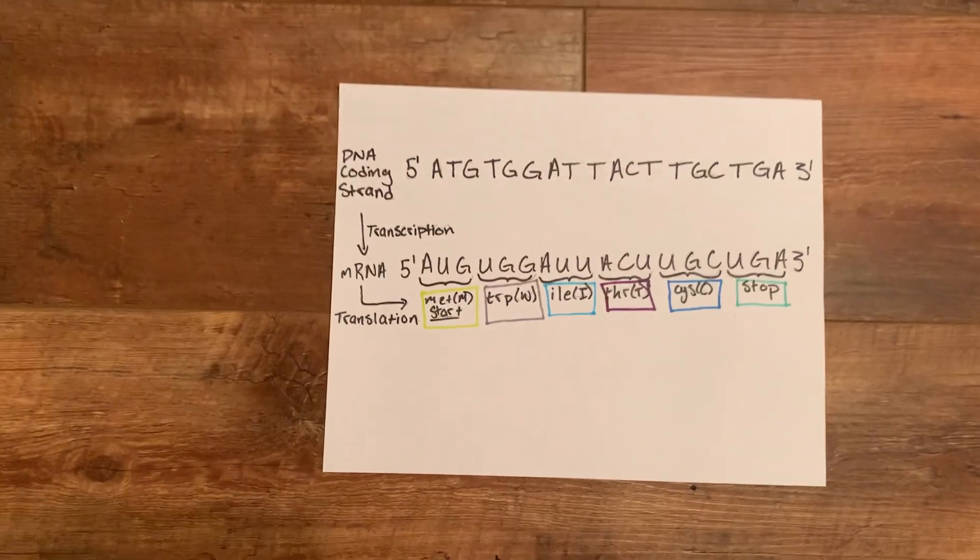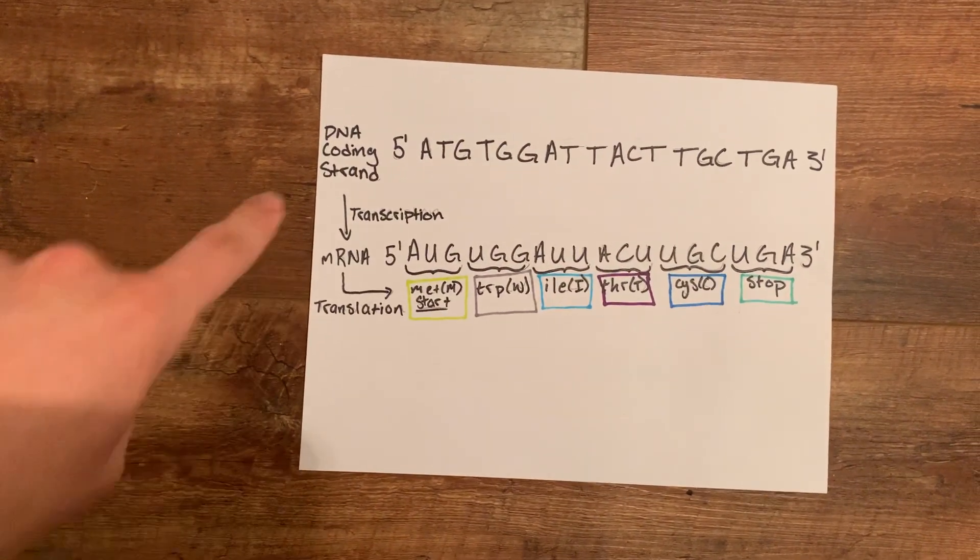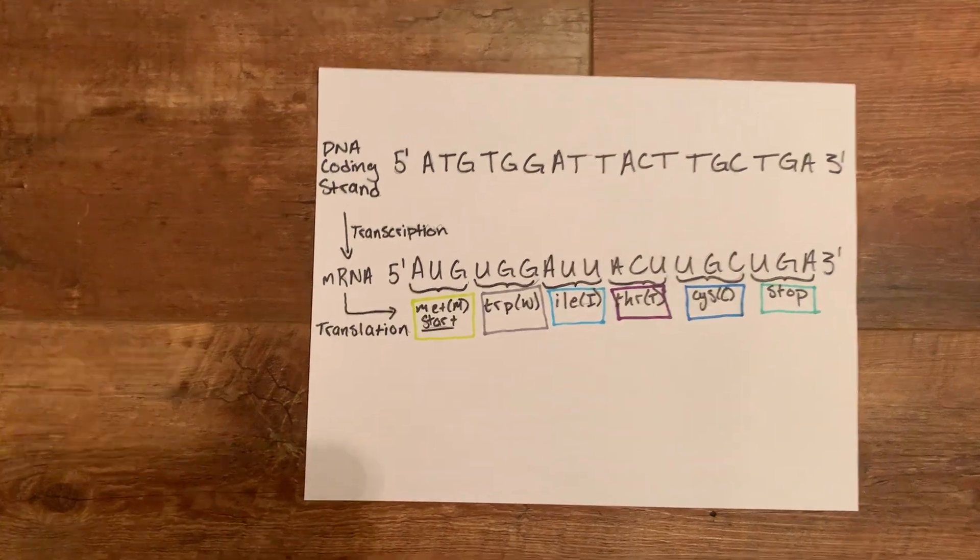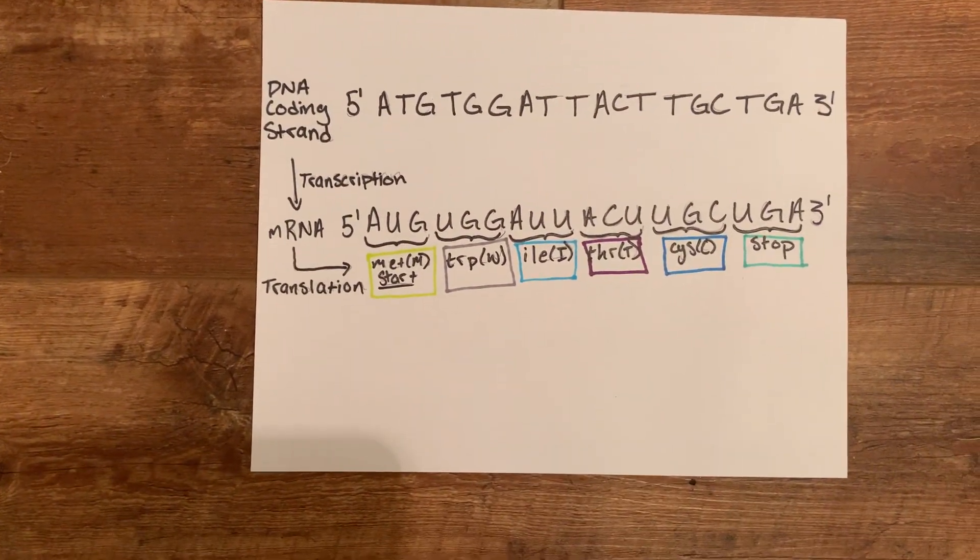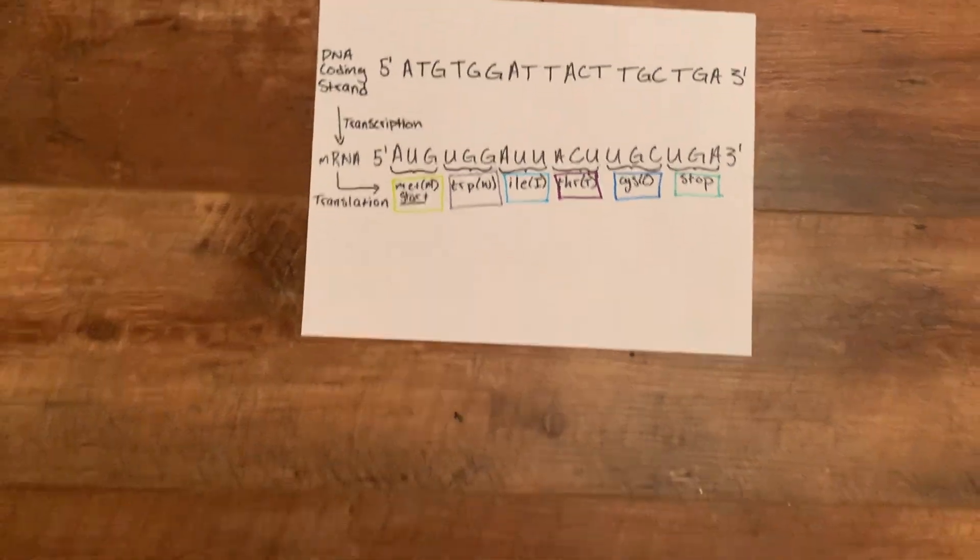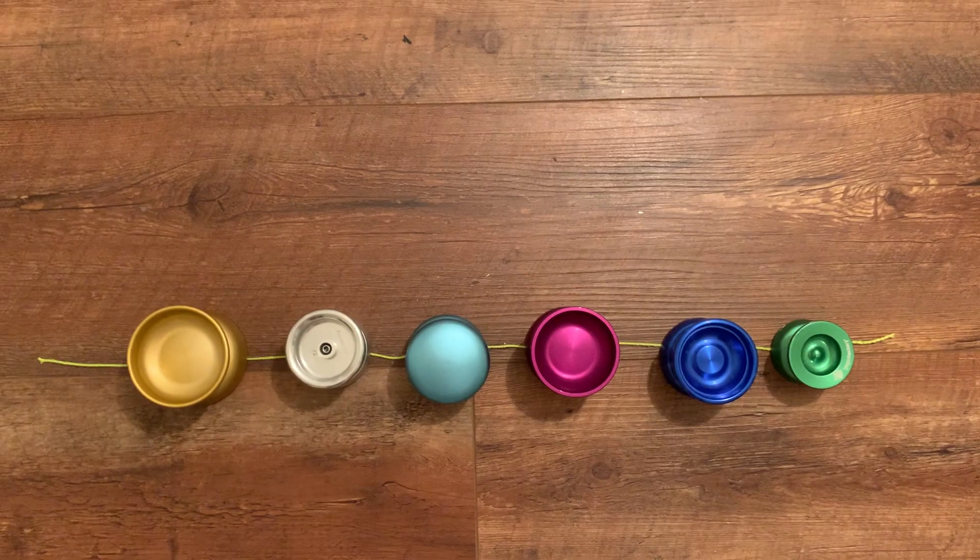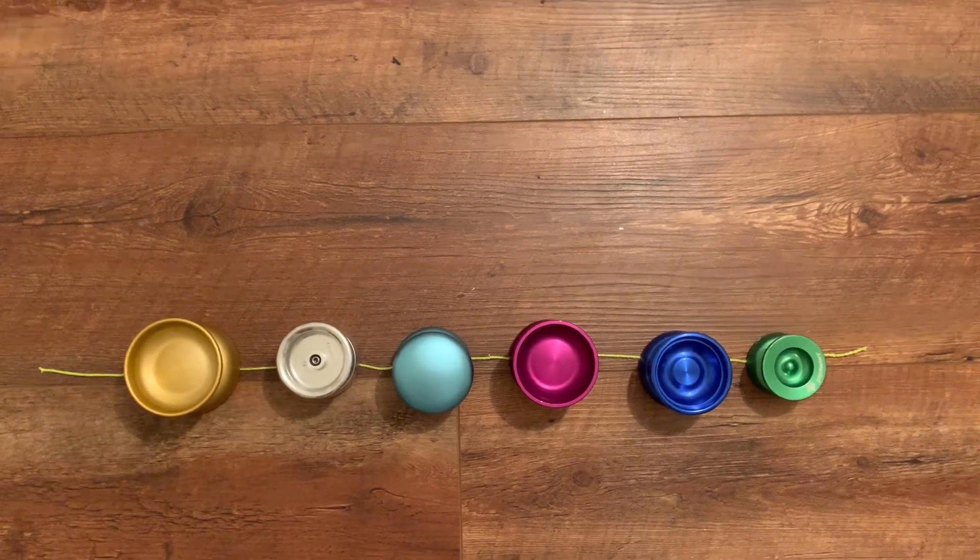We are going to use this wild type mRNA that has been transcribed. This is the coding strand up top, and once you translate the mRNA you get these amino acids. These yo-yos will be our amino acids being connected. They luckily look like amino acids, so I'm happy.